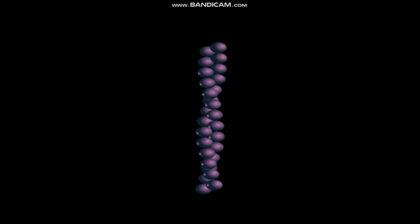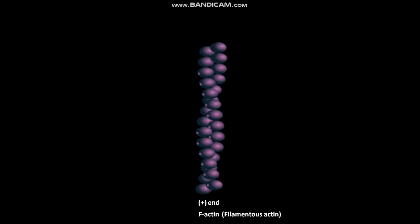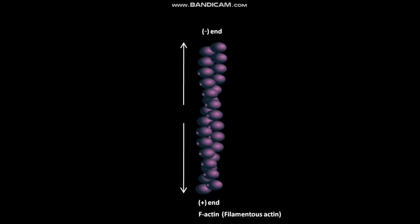This is the F-actin, or filamentous actin, having a plus end and a minus end. The length of a filamentous actin is 72 nm, or nanometers. The F-actin is a linear chain of G-actin, or globular actin, subunits.